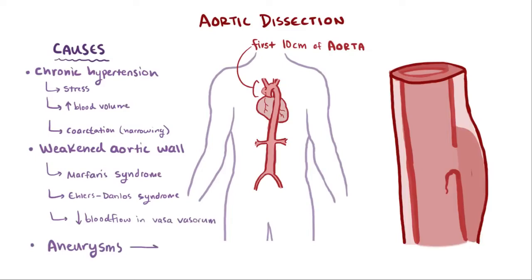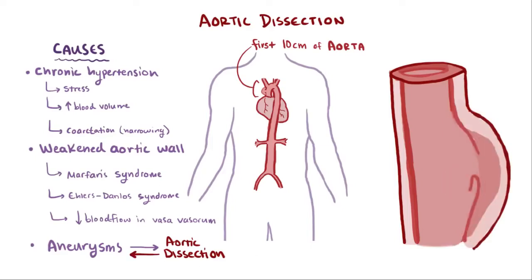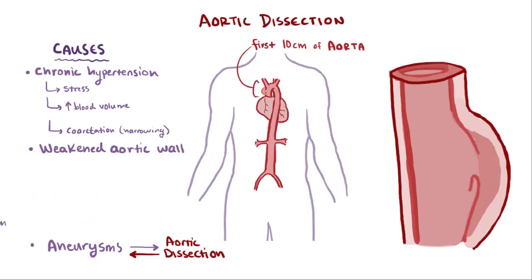Aneurysms can be a cause of aortic dissection as well, and dissection can also cause aneurysms because the dissection weakens the blood vessel wall. In other words, weak walls can lead to outpouching of the blood vessel or a break in the tunica intima, and both of these weaken the walls further.